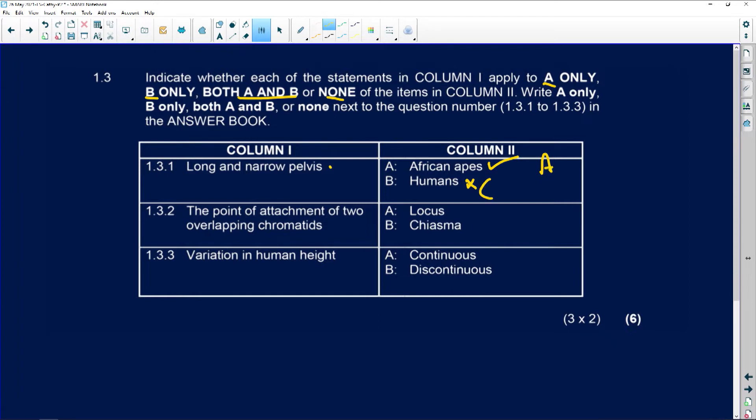Remember, humans have a short and wide pelvis. Why? Because we are bipedal. So bipedalism. It's to support the top part of our body over our legs.